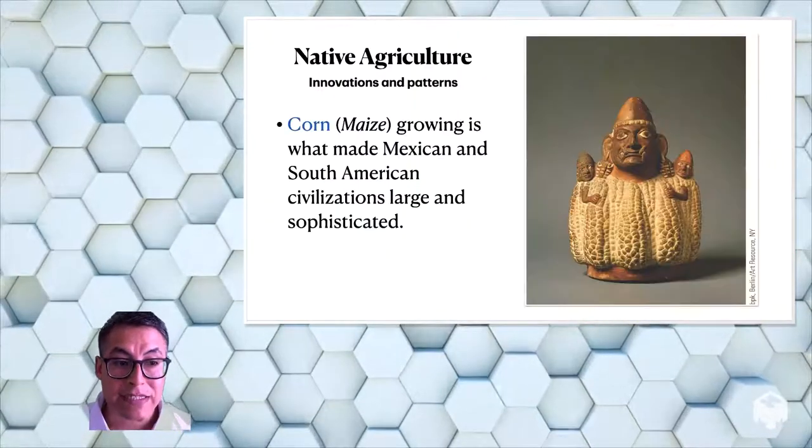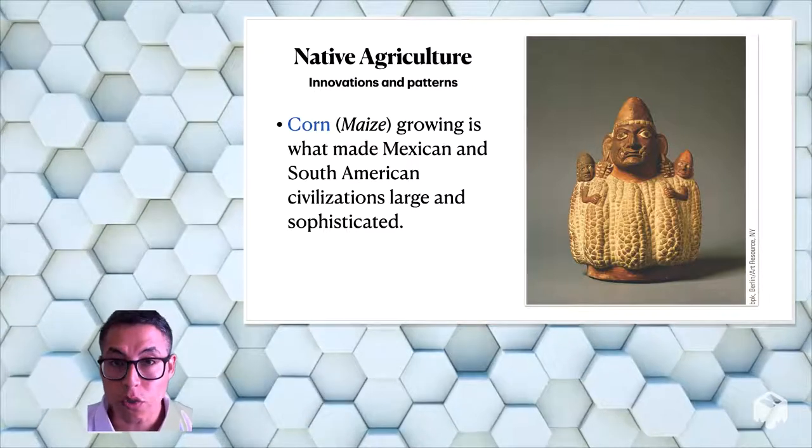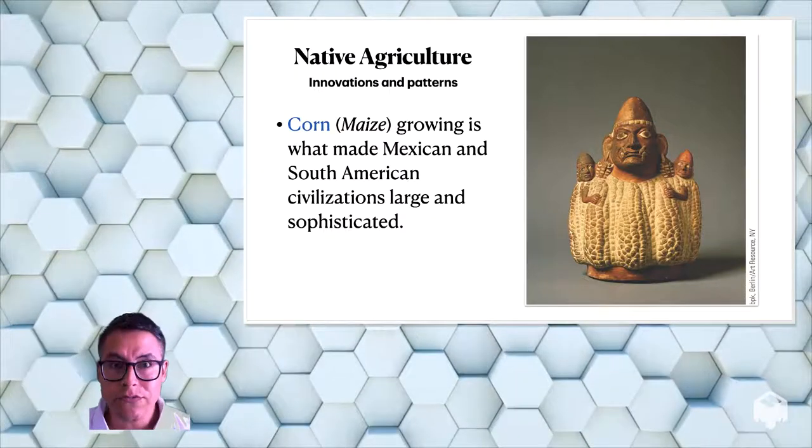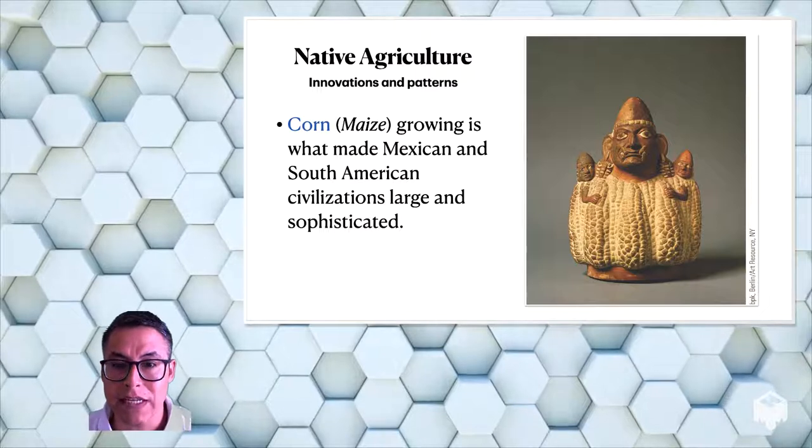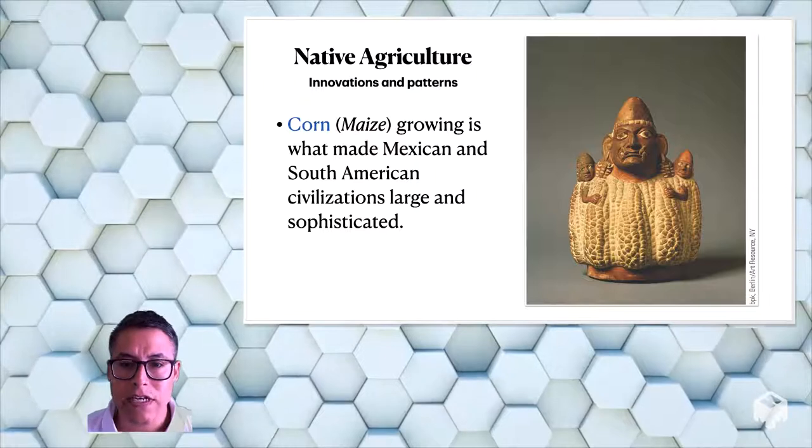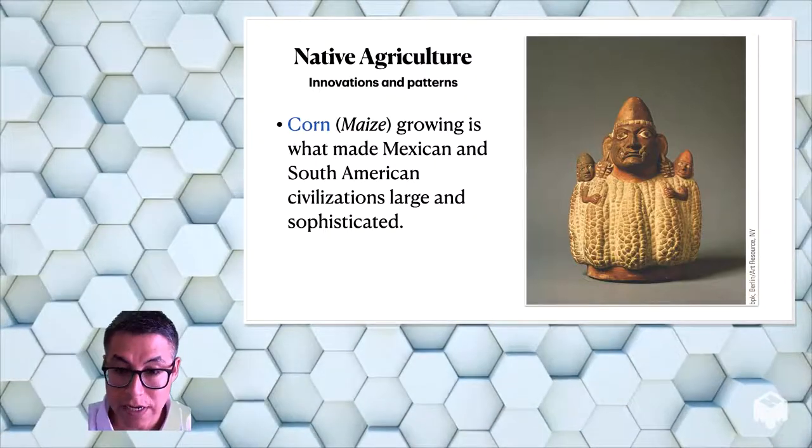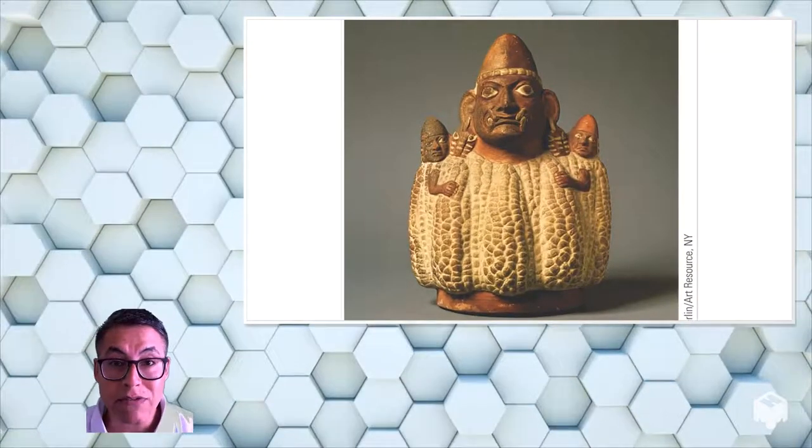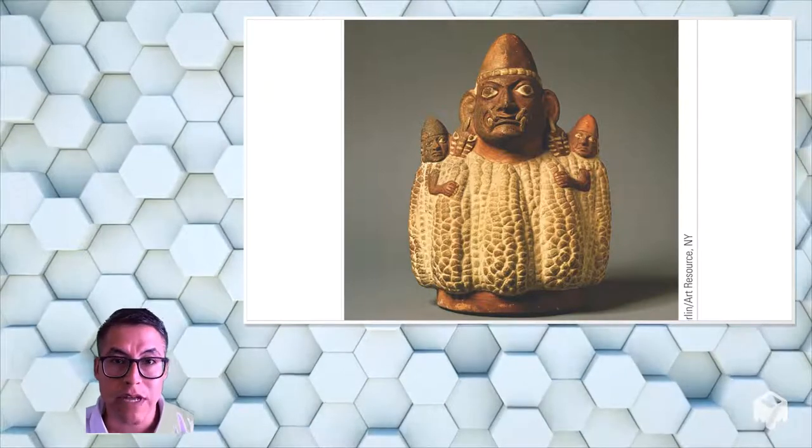The ones that lived in Mexico and South America decided that they were going to grow corn and maize. And because they were successful in growing it, they were able to adapt to the environment that they lived in. A lot of them grew really sophisticated, large civilizations because they were able to sustain them because they had enough food. So for example, in Peru, where we found this little statue, people grew corn and they grew it on mountainsides on terraces that stretched out throughout the Andes Mountains.